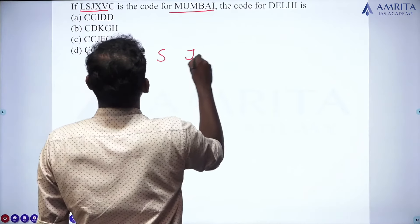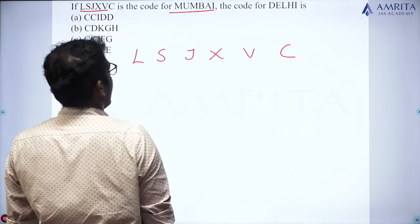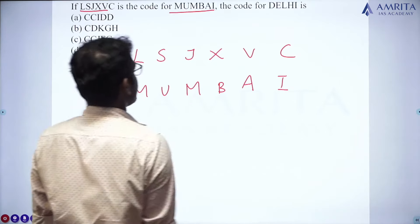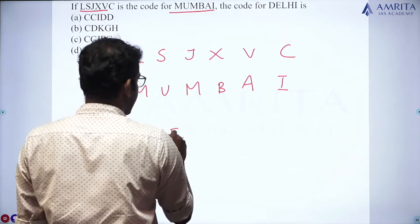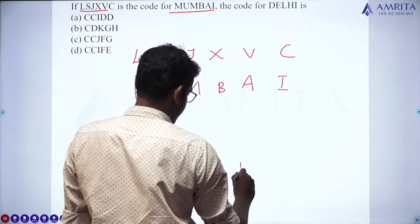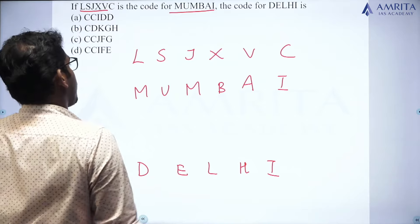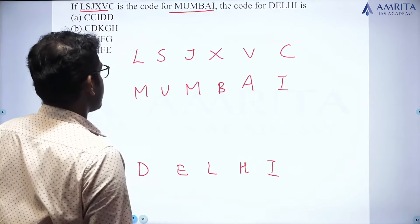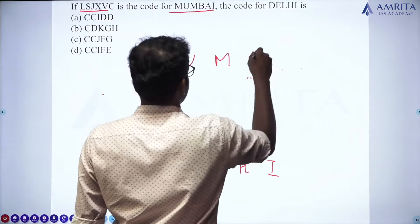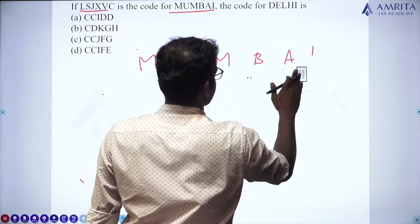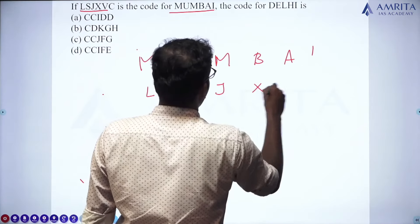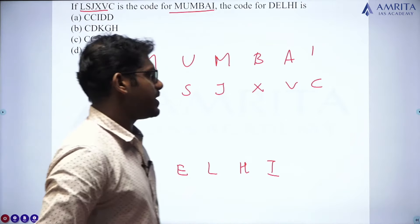Moving on. The second question: L, S, J, X, V, C is the code for Mumbai. We have to find the code for Delhi. The code for Mumbai is L, S, J, X, V, C. How does this code come for Mumbai? Let us check.